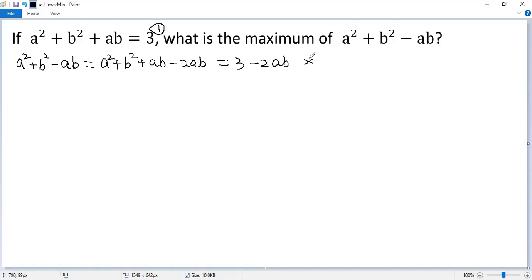We denote that as condition star. Because here is minus, the maximum on the left side is equivalent to finding the minimum of ab. So the maximum of a squared plus b squared minus ab is equivalent to finding the minimum of ab.